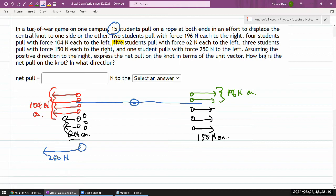Assuming the positive direction is to the right, express the net pull on the knot in terms of the unit vector. How big is the net pull on the knot? In what direction?